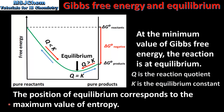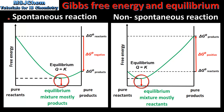Next we'll compare the change in free energy for a spontaneous and a non-spontaneous reaction. For both, the position of equilibrium corresponds to the minimum value of free energy. However, for a spontaneous reaction this minimum value of Gibbs free energy occurs further towards pure products than pure reactants. This means that at equilibrium the mixture will consist of mostly products.